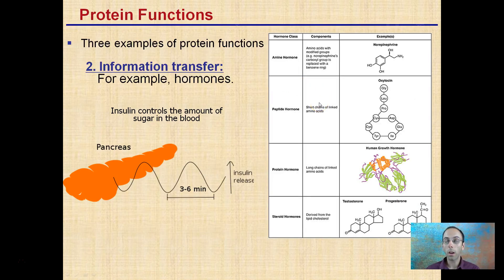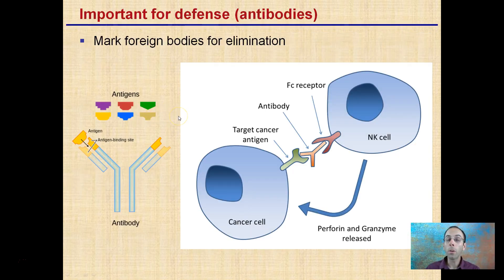Another function of proteins is information transfer. Certain protein hormones or peptide hormones — insulin is an example — help control the amount of sugar in the blood. If your body needs to maintain homeostasis and a controlled level of blood glucose, insulin will help keep that in check. Proteins are also important for defense in the form of antibodies, which mark foreign bodies for elimination. Antigens and antibodies have a very distinctive shape, which again relates to proteins.